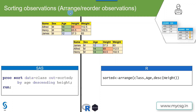Let's say we have this input dataset with data for three students: Alfred, Henry, and James. There are two records where age is equal to 14 and one where age is 12. I want to reorder the observations such that the lowest value in age should come on top, but if there exists more than one record within an age value, I want to give preference to the highest height.